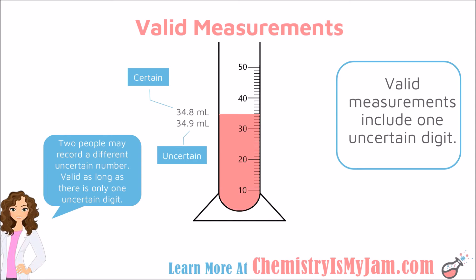Let's look at an example. Here you have a graduated cylinder, and each increment on the cylinder represents one milliliter. I look at where the liquid is located, and I can tell that it is definitely somewhere between 34 and 35 milliliters, so the certain portion of my measurement is the 34. It appears to me to be roughly 34.8 because I'm expected to estimate one digit. My lab partner looks at the same liquid and estimates it to be 34.9. It is absolutely okay that we got a different answer for that last digit, because that is our uncertain estimated digit. Any scientist reading your measurement understands that your final digit is an uncertain estimated digit, so a valid measurement includes one uncertain digit.